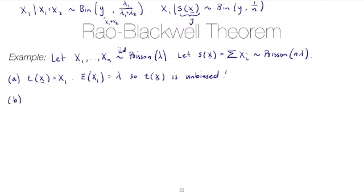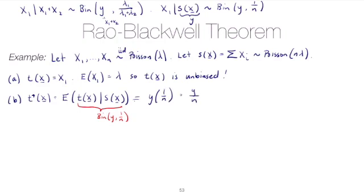Now, according to the Rao-Blackwell theorem, we define t star to be equal to the expectation of t of x conditioned on the sufficient statistic s of x. Well, we said above that t of x conditioned on s of x is binomial y, 1 over n. And so the expectation here will be y times 1 over n, or y over n.